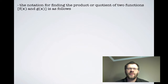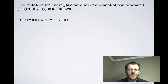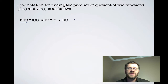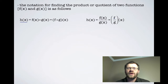The notation for finding the product or quotient of two functions f(x) and g(x) is as follows. The product h(x) equals f(x) times g(x), or simply (f·g)(x). This is very similar to the adding and subtracting of functions we did previously. For division, we write f(x) divided by g(x), or (f/g)(x).